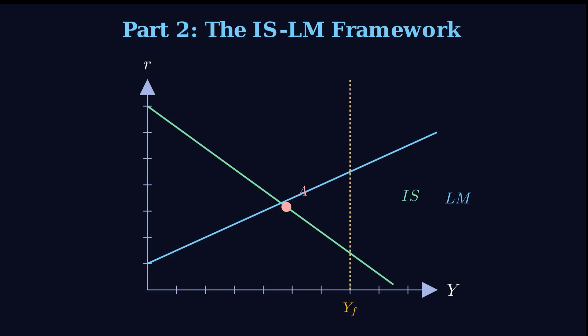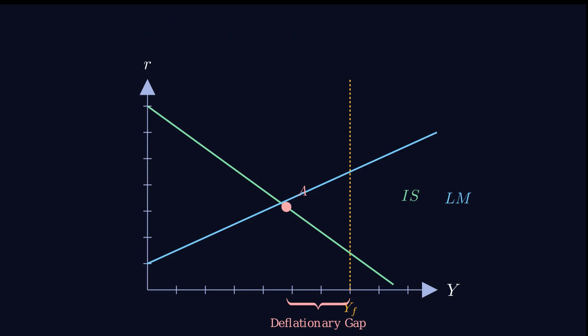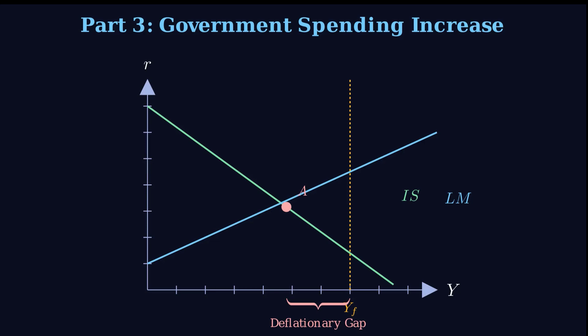So the IS curve shifts right, and the new equilibrium — we'll call it point B — is immediately established at a point with a higher level of output Y and, crucially, a higher interest rate R. So output is up, which is what the government wanted — that's the win. But borrowing just got more expensive for everybody — that's the cost. We've established that both output and the interest rate went up. The output part is pretty straightforward: the government is spending more money.